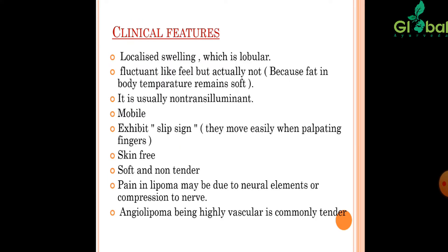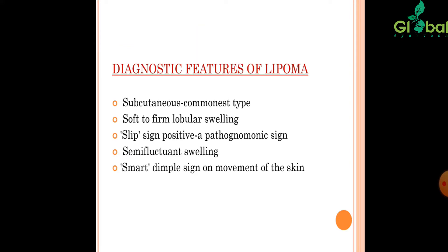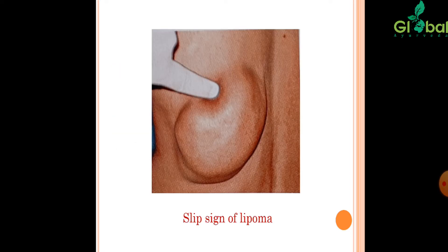Clinical features of Lipoma: localized swelling which is lobular and fluctuant-like but not truly fluctuant, because fat at body temperature remains soft. It is usually non-transilluminant, mobile, and exhibits the slip sign — the edge moves easily under palpating fingers. The skin is free. It is soft and non-tender; pain may be due to a neural element or compression of a nerve. Angiolipoma, being highly vascular, is commonly tender. Diagnostic features: subcutaneous is the commonest type; soft to firm lobular swelling; slip sign positive — this is pathognomonic; semi-fluctuant swelling; and dimple sign on movement of the skin.